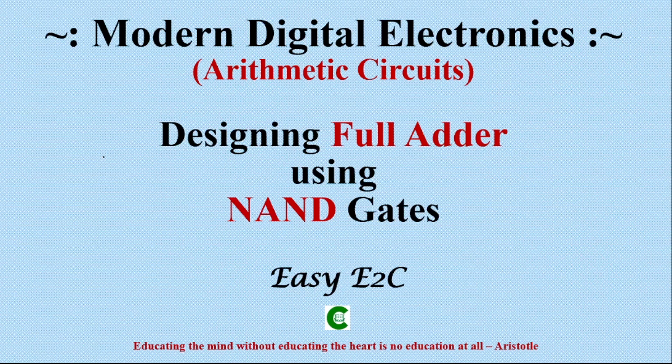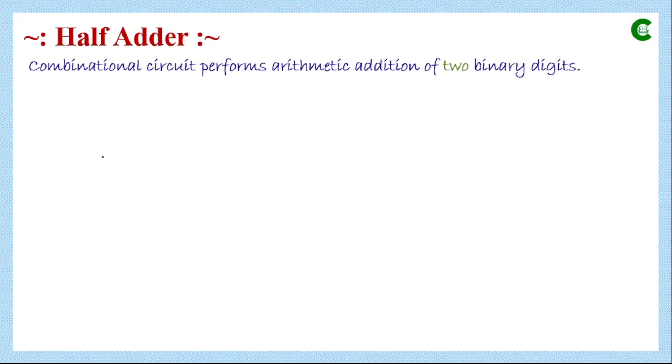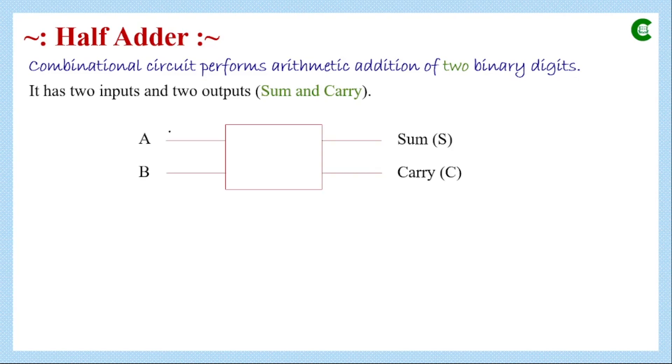In today's class we will design or realize a full adder using NAND gates only. We know that an adder is a combinational circuit which adds binary digits. In our last class on digital electronics we have seen the truth table and logical circuits of half adder and full adder. A half adder is a combinational circuit which performs arithmetic addition of two binary digits. A half adder circuit has two inputs and two outputs called sum and carry.